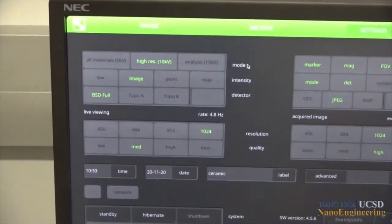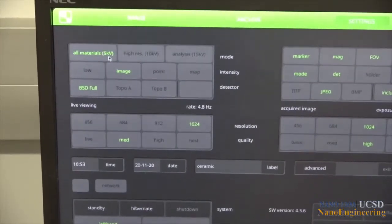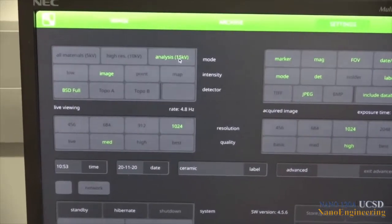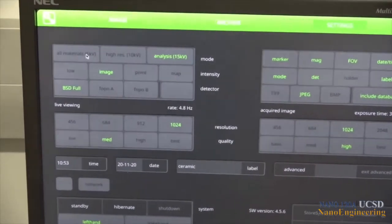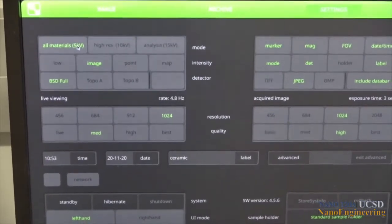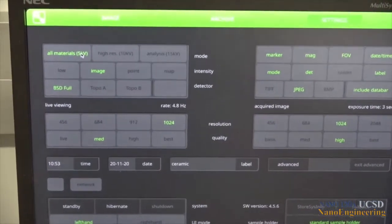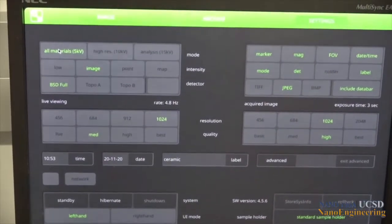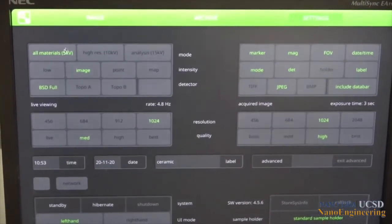When we click on settings, this menu comes up. The menu boxes on the left labeled mode allow us to choose our accelerating voltage of 5 kV, 10 kV or 15 kV. The 5 kV with its low sampling volume can be used for all materials, while the 10 kV is typically used for higher resolution imaging. X-ray analysis is usually performed with the 15 kV voltage.